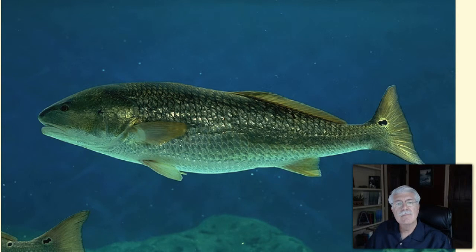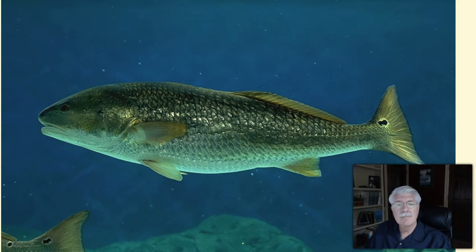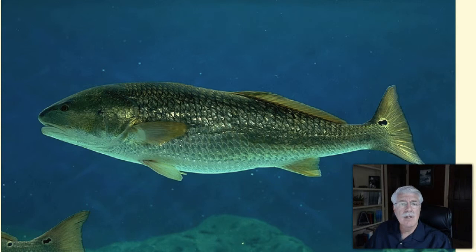This lesson is about energy flow and communities in aquatic ecosystems. What do you need to survive? Well, you need air to breathe, clean water to drink, food to eat, and shelter to protect you from the elements. These are basic survival needs for humans.